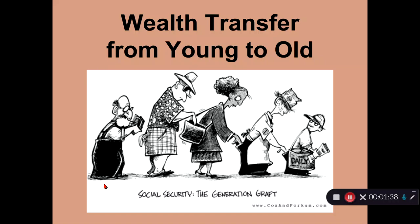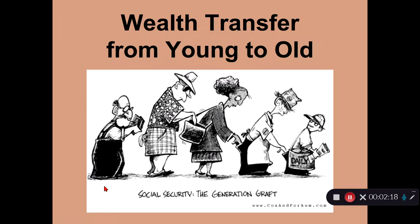How does the U.S. federal government fund the Social Security system? Not through taxes. People who work are required by law to contribute a portion of their salary into the Social Security system. The federal government does not save those contributions for the individual who makes them — it immediately transfers them to retired individuals. When the working individuals retire, their pension is paid by younger individuals who are currently working.